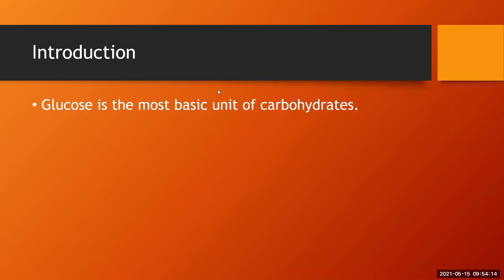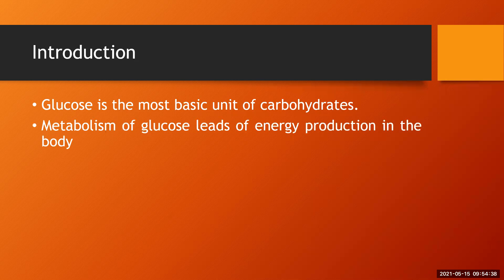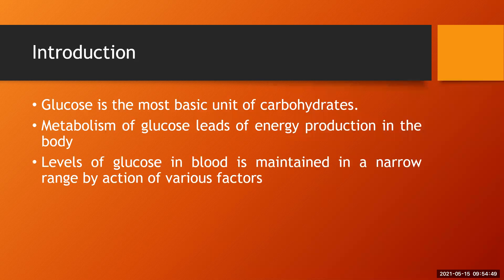Glucose is the most basic unit of carbohydrates. Whenever digestion of the complex carbohydrates we take through our diet occurs, we end up with glucose. Whatever carbohydrate our body absorbs in the intestine will be in the form of glucose. Metabolism of glucose is very important for energy production — if glucose is not available, energy production in the body gets affected. Once absorbed, glucose circulates throughout the body where it is either utilized by cells for energy or stored for later use.